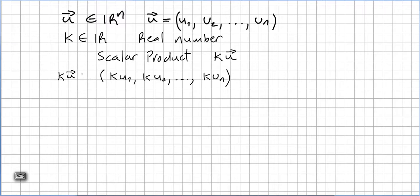This video is on linear algebra. We are still in the chapter of vectors in Rn and the complex n-space. In the previous video we saw vector addition. In this video we are going to talk about the product of k times u — a scalar times a vector.